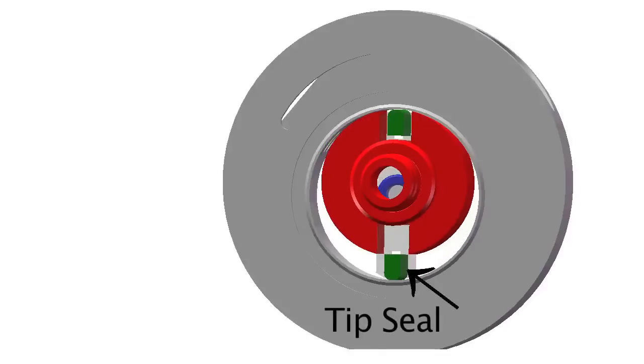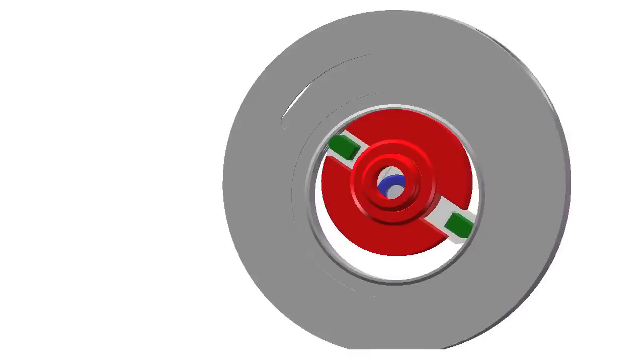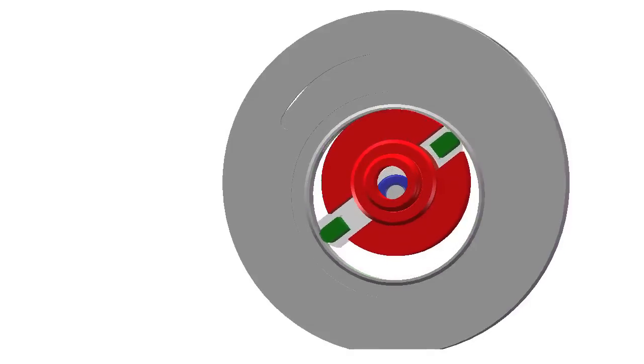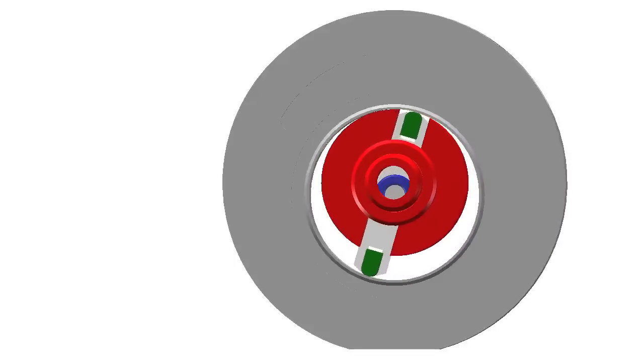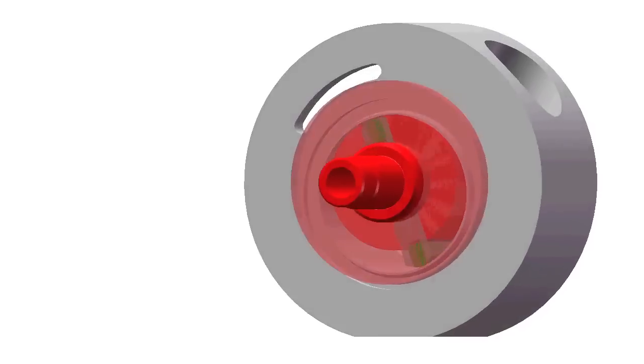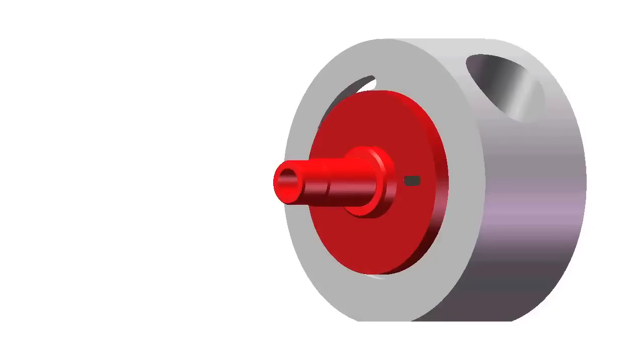The tip seals are placed in slots at the ends of the vane. They are pressure activated, providing a compliant seal between the suction and compression chambers. Because the tip seal spans such a small gap between the vane and the housing bore, it experiences extremely low forces. As a result, the tip seal can be constructed of a low friction, wear resistant plastic alloy.